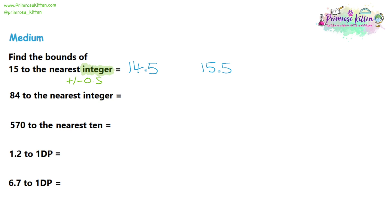Before we move on, there's a bit of special notation. Our mystery number n that rounded to 15 was in between 14.5 and 15.5. We add an inequality symbol: 14.5 ≤ n < 15.5. The less-than-or-equal sign on the first symbol tells us 14.5 is a value that would round up to 15, so we're allowed to include it. The strict less-than on the second symbol tells us 15.5 itself is not included — it would round up — but anything below it, up to and including 14.9 recurring, is absolutely fine.